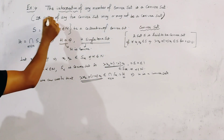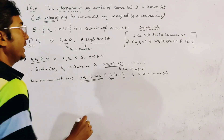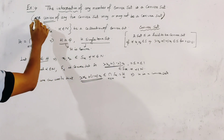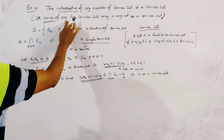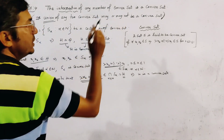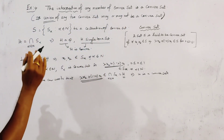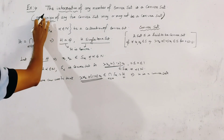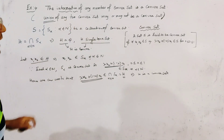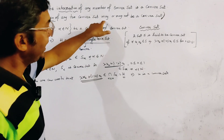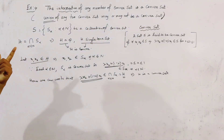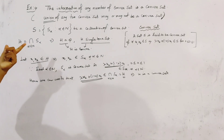Now we discuss about the union. It is asked whether the union of any two convex sets is convex or not. We can say that the union of any two convex sets may or may not be a convex set.